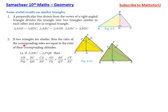If two triangles are similar, then the ratio of the corresponding sides are equal to the ratio of the corresponding altitudes. So AD/PS equals BE/QT equals CF/RU. This means corresponding sides and corresponding altitudes are proportional.